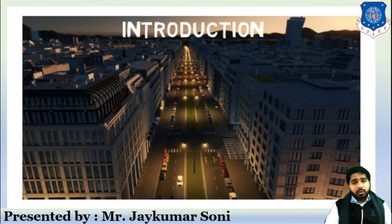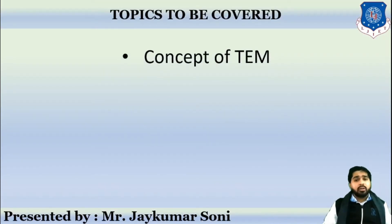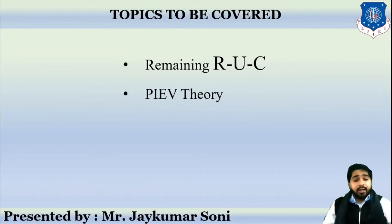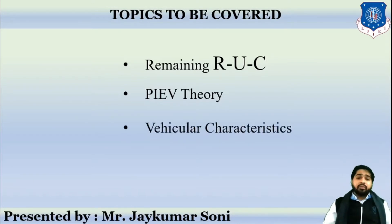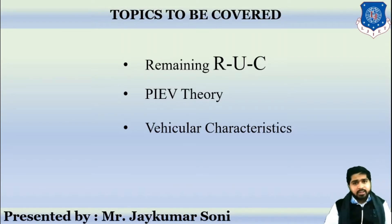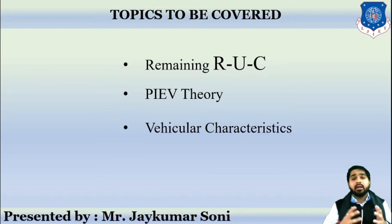We have been discussing the first module, the introduction part. In this session, we are going to cover the remaining concept of TEM — the remaining topics of road user characteristics, PIEV theory, and vehicular characteristics. The method to remember the scope of traffic engineering and management is CSGOPA: C stands for traffic characteristics, S for studies, G for geometric design, O for operation, regulation and control, P for planning and analysis, and A for administration and finance.